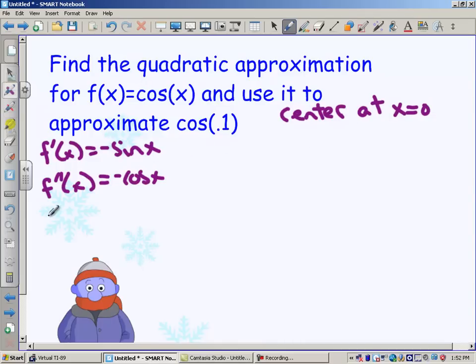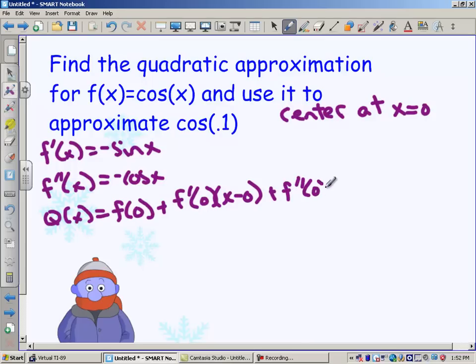Okay, so my quadratic approximation is going to be f of 0 plus f prime of 0 times x minus 0 plus f double prime of 0 over 2 factorial times x minus 0 squared.